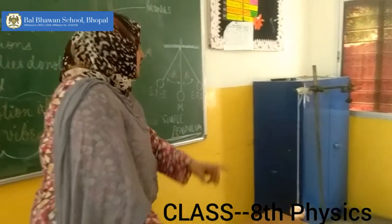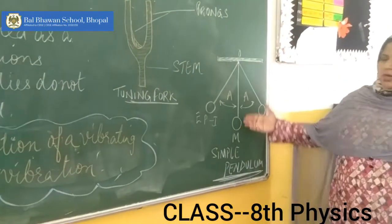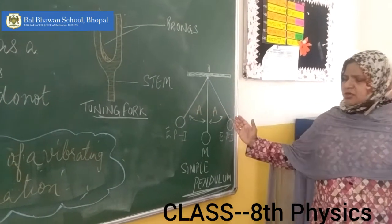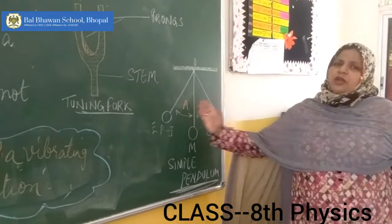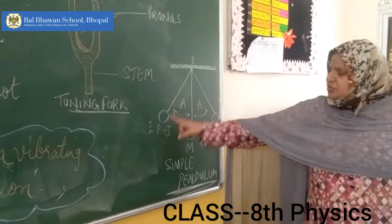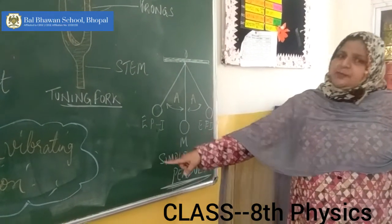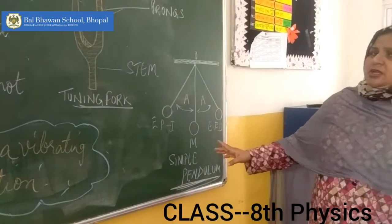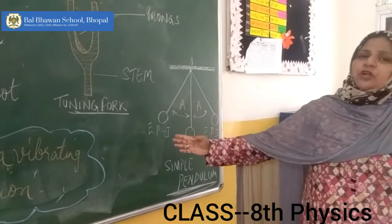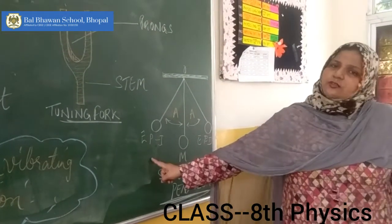Now, this is a simple pendulum that you studied last year — the oscillating simple pendulum. This is the oscillation. How is it defined? The to-and-fro motion of a pendulum, or the movement of a pendulum bob from the first extreme position to the second extreme position and back to the first — this was oscillation. Similarly, you will define a vibration: the to-and-fro motion of a vibrating body, or the motion of a vibrating body from its first extreme position to the second extreme position and back to the first.